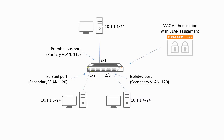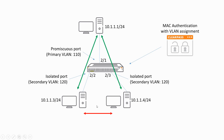Let me show you the setup for the private VLANs. We have an access switch with two access devices connected, and an uplink port 2/1 to another device which is going to be the promiscuous port. We will be configuring an isolated secondary VLAN, which means that both devices at the bottom will not be able to communicate with each other. However, they can still reach the promiscuous port. The switches are already configured for IP — everything is on VLAN 1.